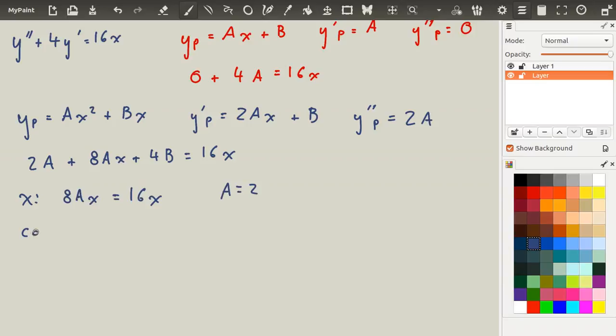Then for the constants, you'll notice that on the right-hand side, we don't have any constants being added here. So we effectively have a plus 0. So that means that 2a plus 4b must be equal to 0. So then we have 4 plus 4b is equal to 0.